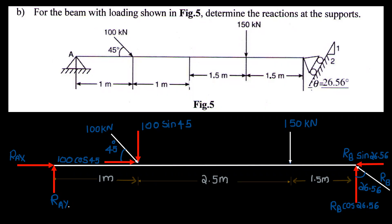The 100 kN inclined load has a vertical component of 100 sin 45 and a cosine component of 100 cos 45, since the angle is 45 degrees. At the second support, the reaction RB is inclined, with a cosine component and a vertical component.